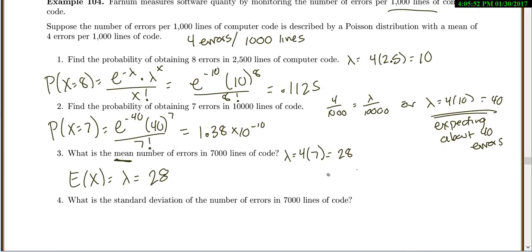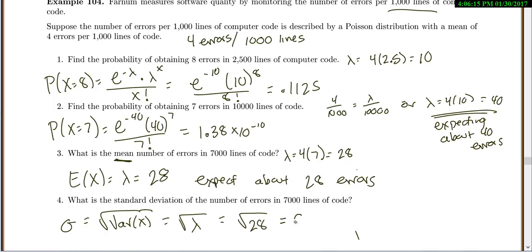So you expect about 28 errors. And for standard deviation, standard deviation is the square root of variance, so the square root of λ, because the variance is just equal to λ, so the square root of 28 is 5.29.